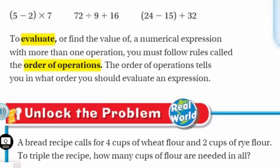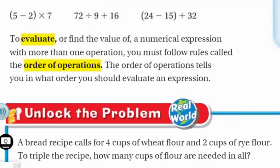The order of operations tells you in what order you should evaluate an expression. You may be thinking: why is there an order of operations? Because if you look above, we have 72 divided by 9 plus 16 — should we divide 72 by 9, or do 9 plus 16 first? The reason we follow the order of operations is that you're going to get different answers if you don't follow the rules.